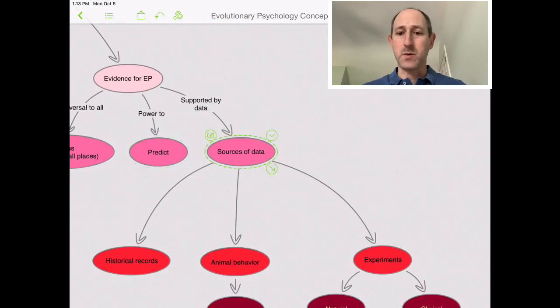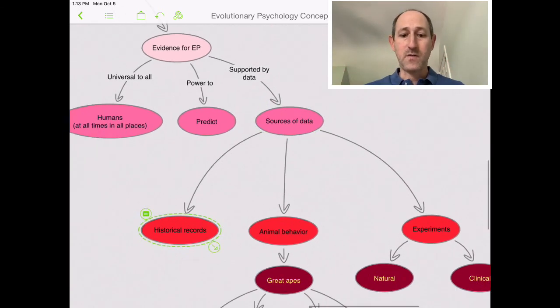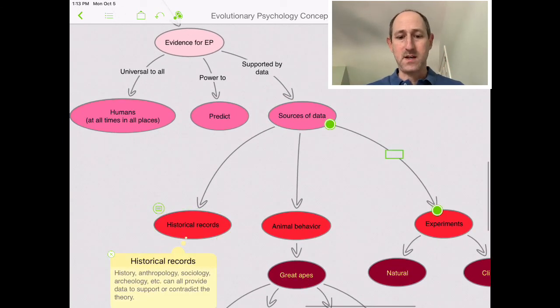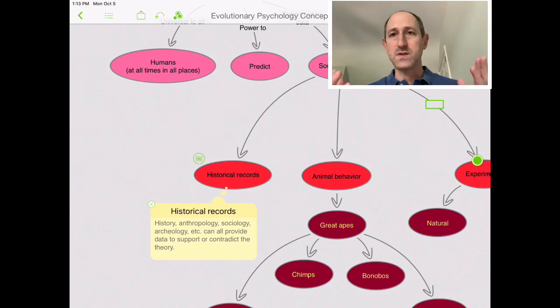Finally, and perhaps most importantly, what are the sources of data that we can gather that will either show yes, this is something that helps us, or no, it contradicts? So first, think about historical records, and that's going to be anthropology, sociology, archaeology - all can provide data that might support or contradict the theory. When we see people in the historical record behaving a certain way, can we explain it or not?